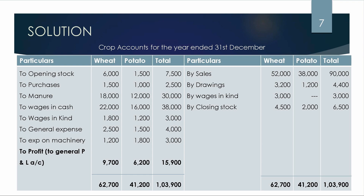On the credit side, sales: wheat 52,000, potato 38,000, total 90,000. General expenses: wheat 2,500, potato 1,500, total 4,000. Expense on farm machinery: wheat 1,200, potato 1,800, total 3,000. Closing stock: wheat 4,500, potato 2,000, total 6,500.